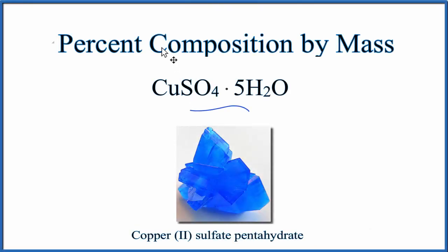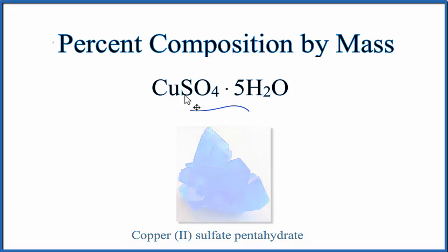In this video we'll find the percent composition by mass for the water in copper sulfate. When we look at the formula we have copper and then the sulfate, the S and the four O's, but then we have this dot 5H2O. What that means is that we have our CuSO4 here and there